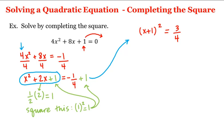And now we'll take the square root of both sides, which gives us x plus 1 equals plus or minus the square root of 3 fourths. Or x plus 1 equals plus or minus the square root of 3 divided by the square root of 4, which is 2.